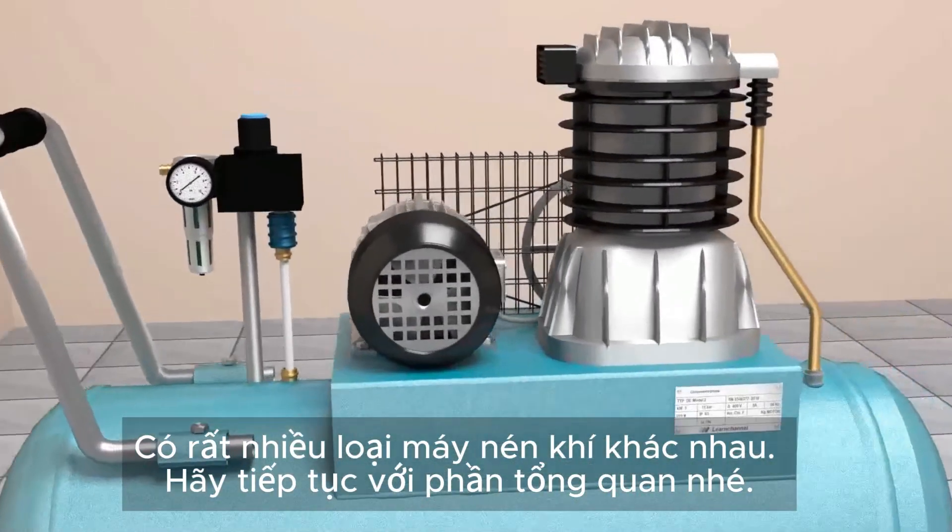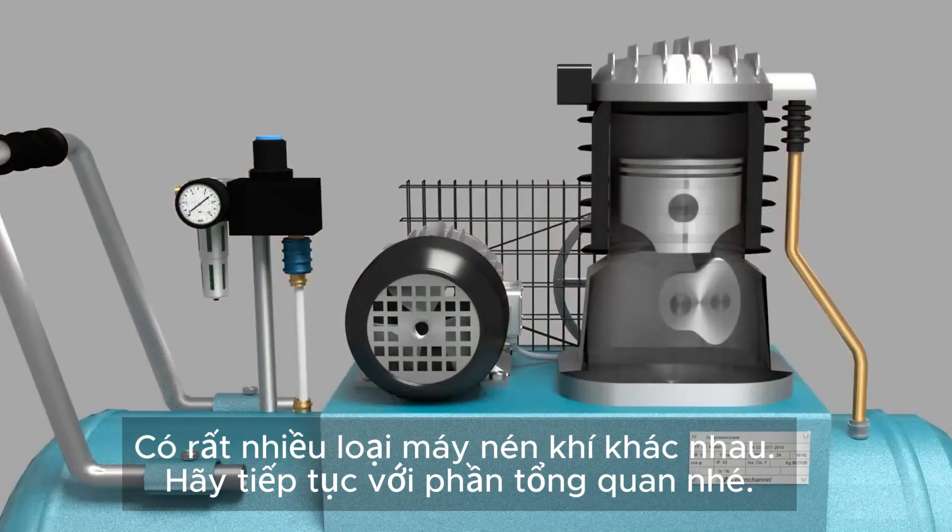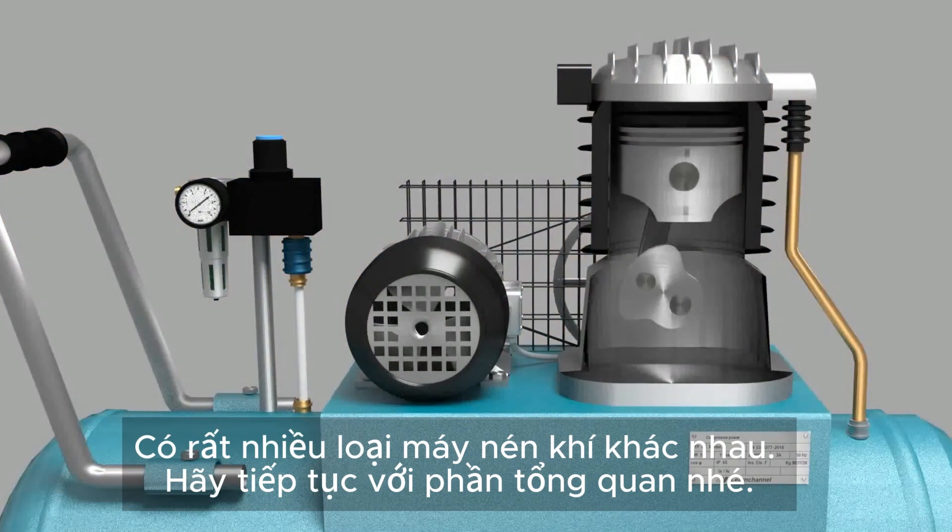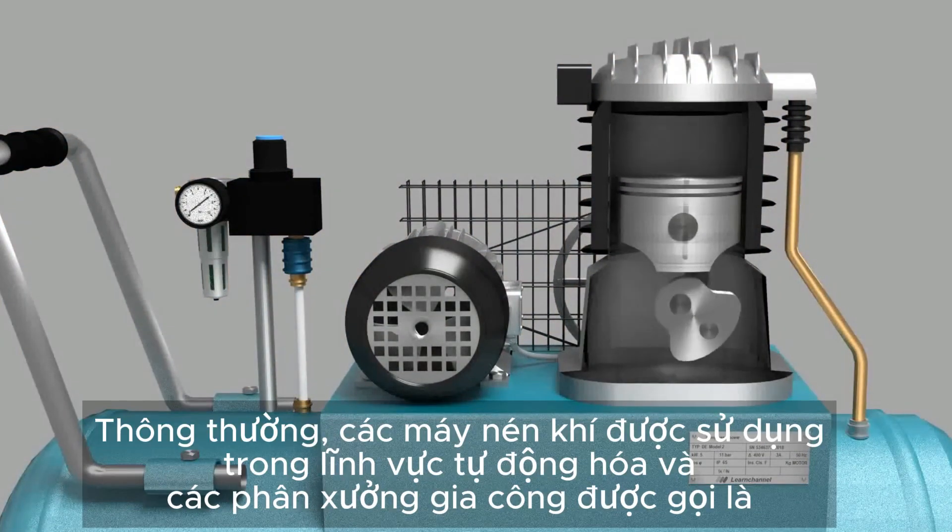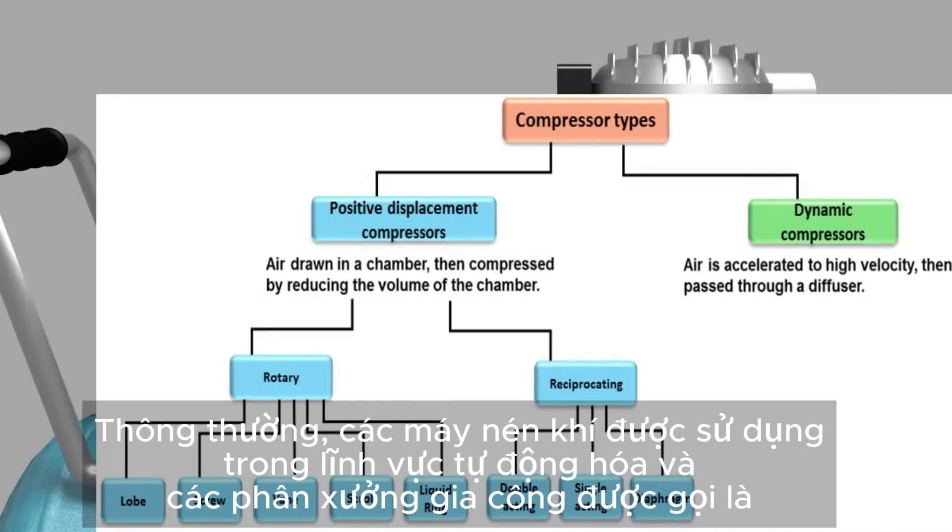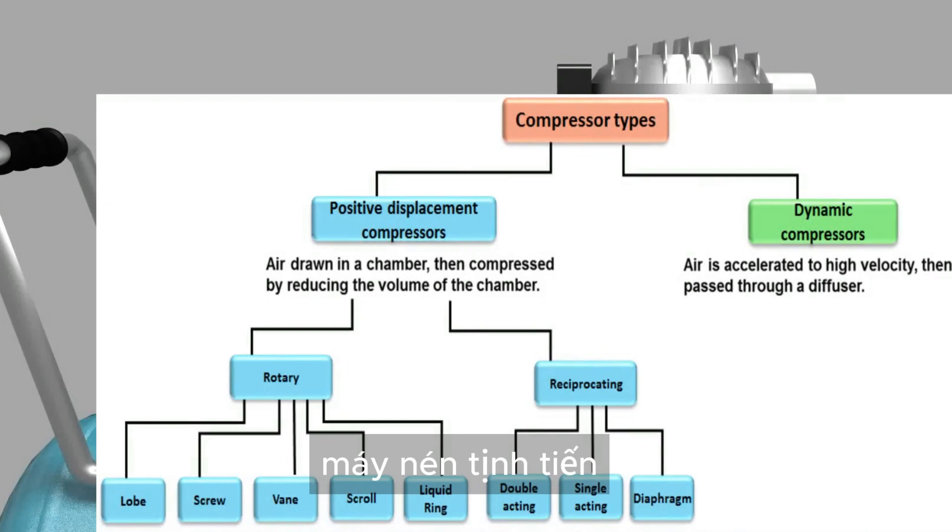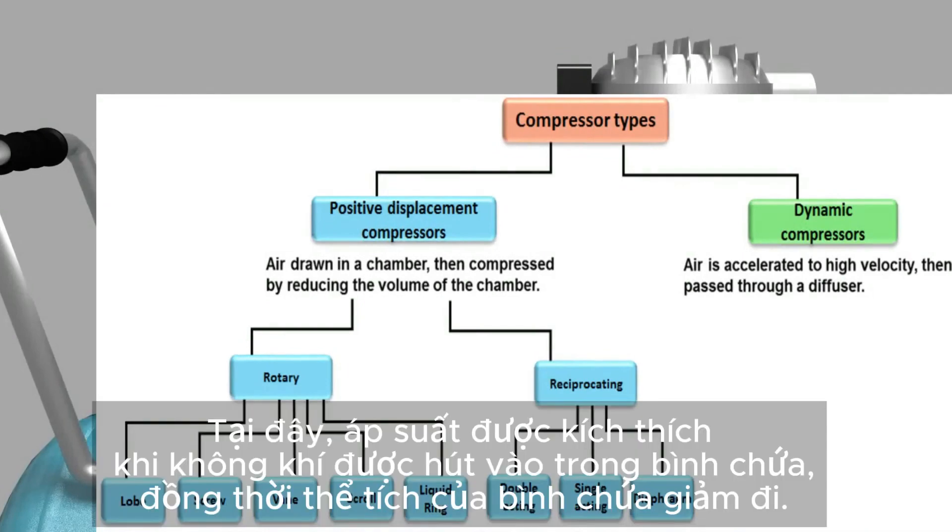Well, there exists a variety of different compressor types. Let's continue with an overview. Normally, the compressors used in the field of automation and workshops are the so-called positive displacement compressors. Here, pressure is excited when air is drawn in a chamber and the volume of this chamber is reduced.